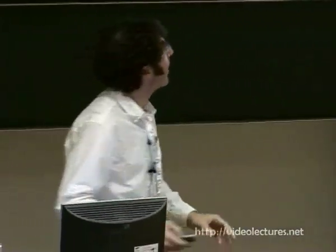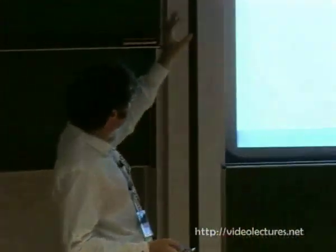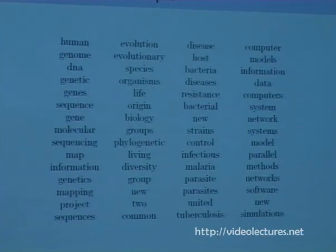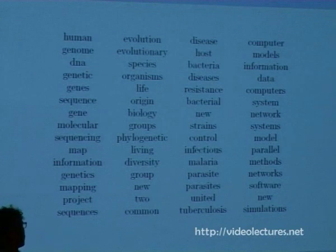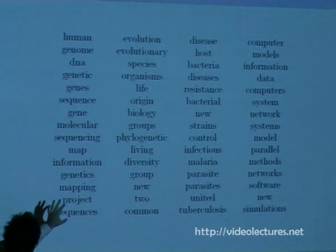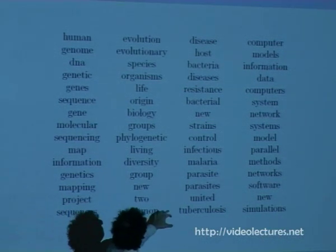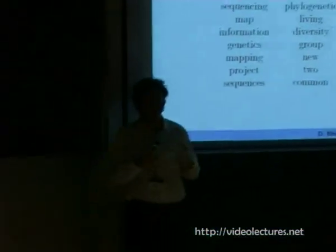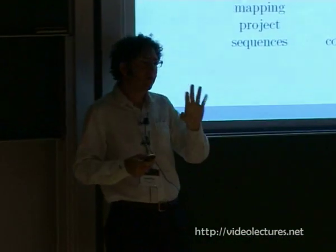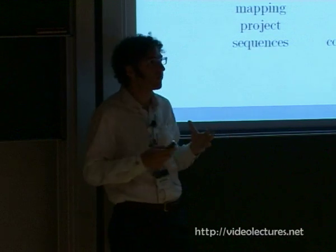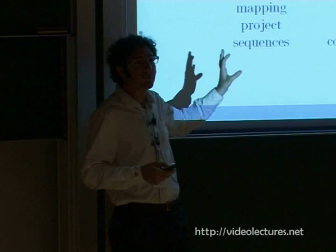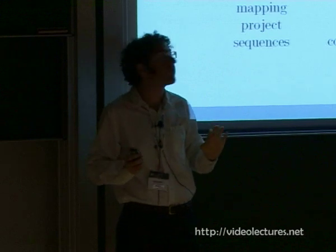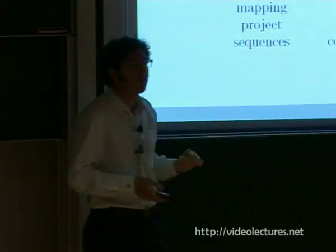What we can do with topic models includes discovering topics from a corpus. A topic is a distribution over terms in a vocabulary. Here are the top most probable terms in four topics uncovered by analyzing texts in the journal Science: one topic has human, genome, DNA, genetic, evolution, evolutionary, species, organisms, disease, host, bacteria; another has computer models, information, data, computers. These are words that seem to go together in a thematically coherent way. We'll discuss the pitfalls of over-interpreting these probability distributions over words on Thursday, but for now we can treat them as topics.